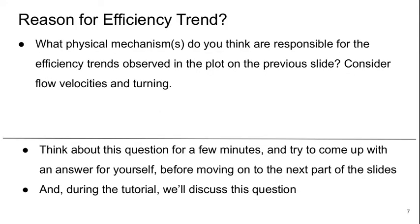So we see this general trend in efficiency that the efficiency gets higher as we move towards the bottom left of the plot. What mechanisms do you think are responsible for these efficiency trends? As a hint, think about the flow velocities and the flow turning. Take a minute and think about this. Try to come up with an answer for yourself before you move on to the next part of the video. And we'll also discuss this during the tutorial.